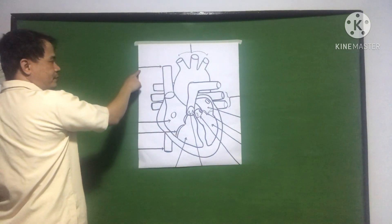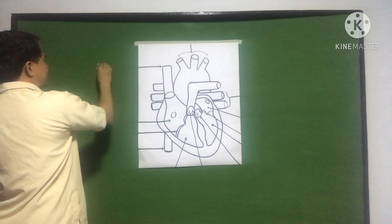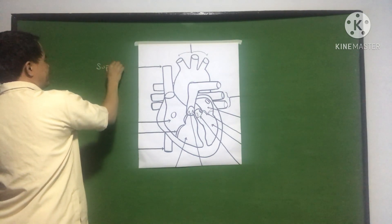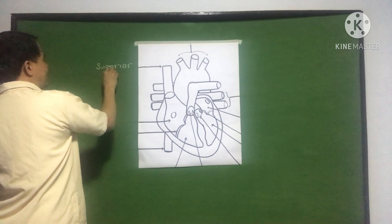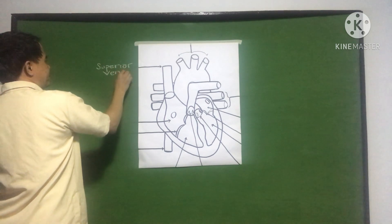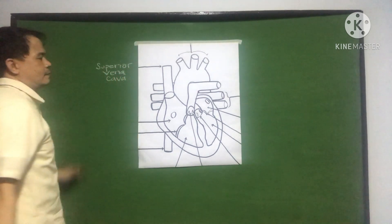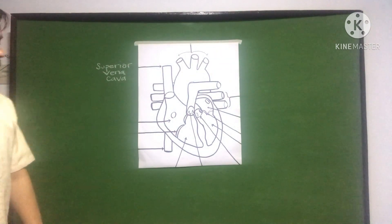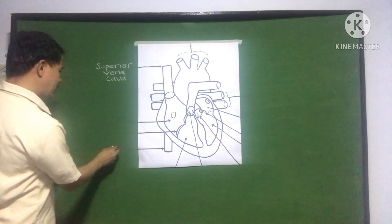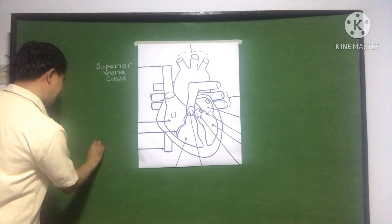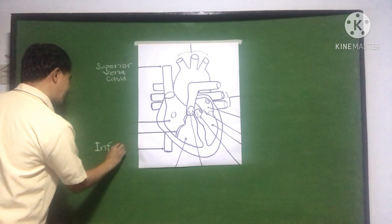So I have here a cross section of the heart and we're going to discuss the parts. This is the first part, called the superior vena cava. That's the first part. Next, we go down to the inferior vena cava.